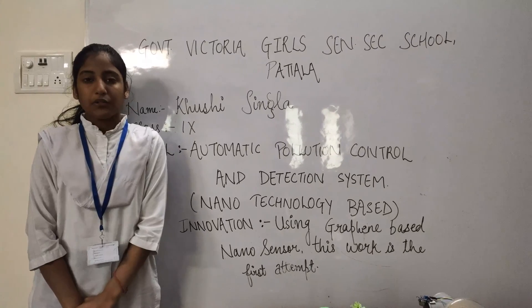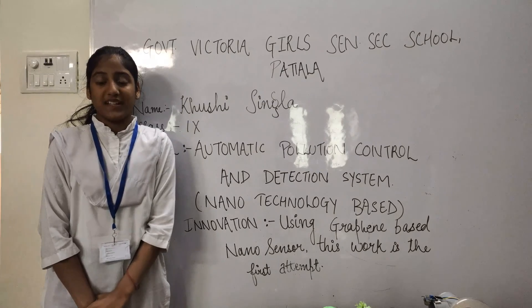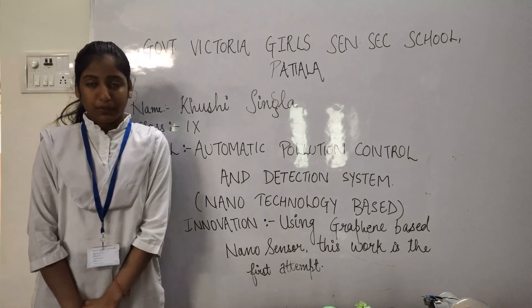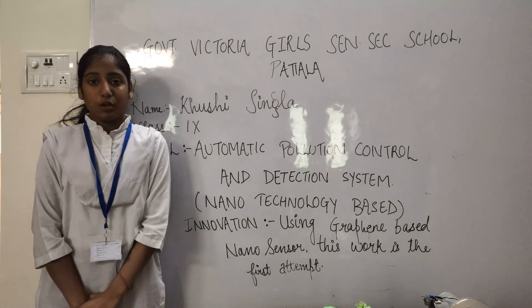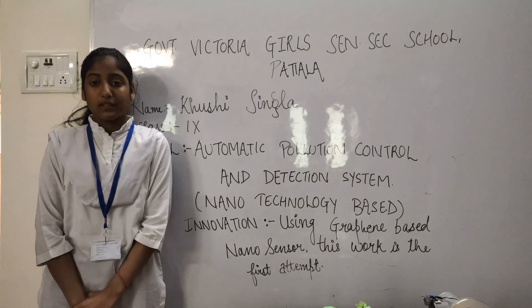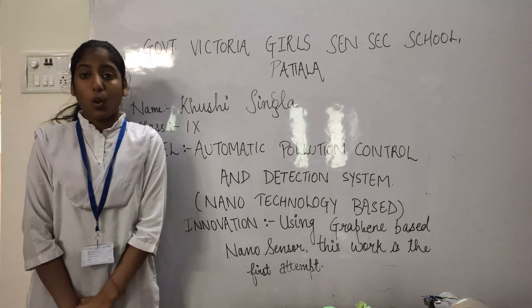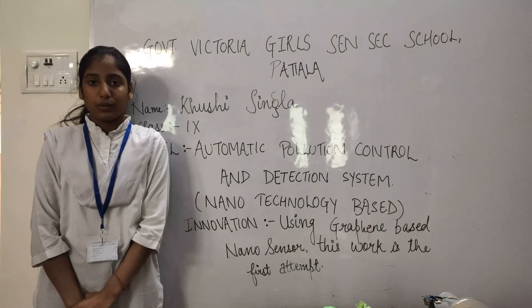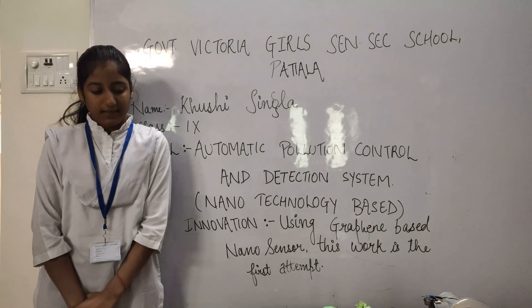Around 3.8 million premature deaths annually are attributed to outdoor air pollution. About 80% of those deaths are due to heart disease and stroke, while the other 20% are due to respiratory illness and cancer.